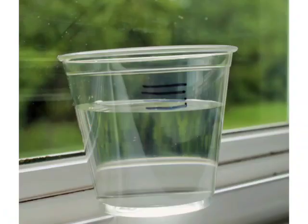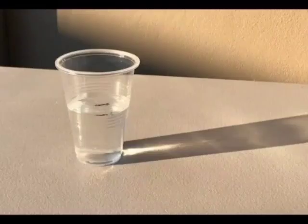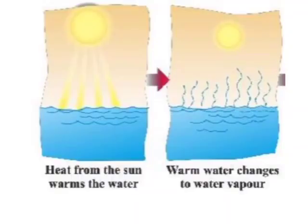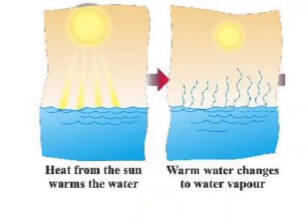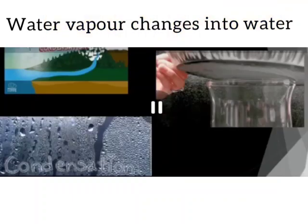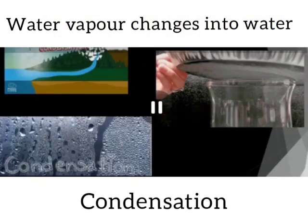Take some water in a glass bowl. Place it in the sun. Observe it after a few hours. Has the amount of water in the bowl gone down? Where did the water go? The water changed to water vapour in the heat of the sun. This process is called evaporation. Evaporation of water takes place all the time, but it is faster if the water is heated. On cooling, water vapour changes into water. This process is called condensation.